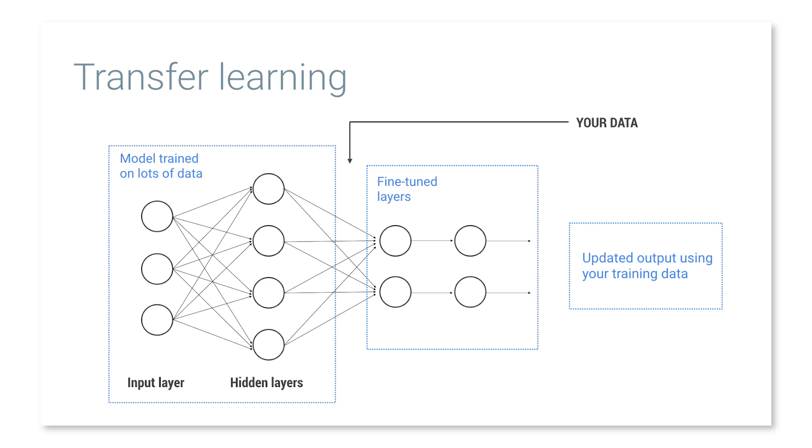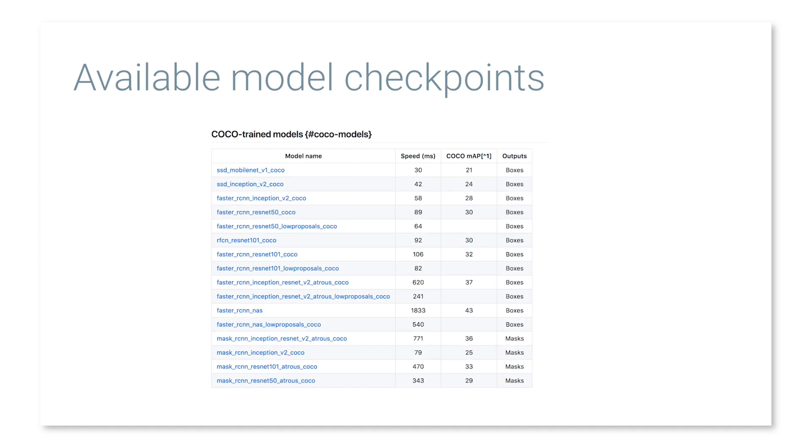To do that, it uses a technique called transfer learning, which utilizes a model that's already been trained on a similar classification task using millions and millions of images. As a developer using the Object Detection API, I take the checkpoints of the second-to-last layer of that pre-trained model and update it with my own data, so I don't need to start from scratch.